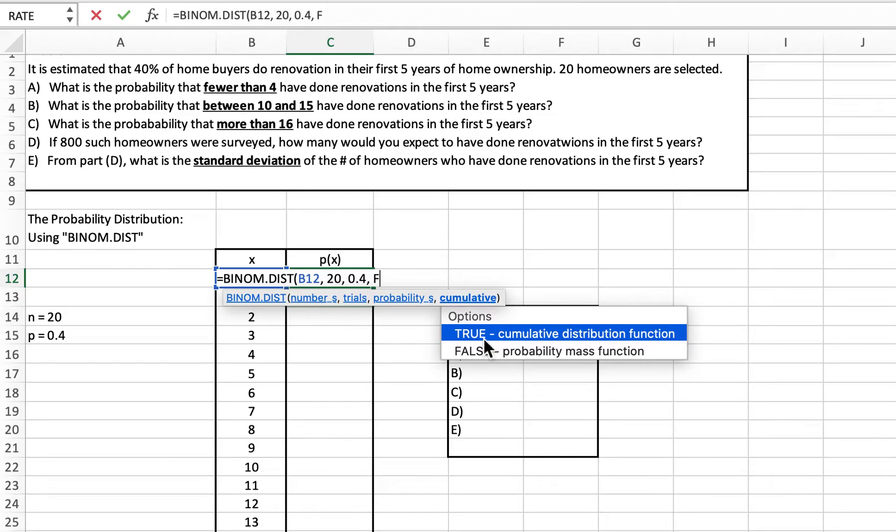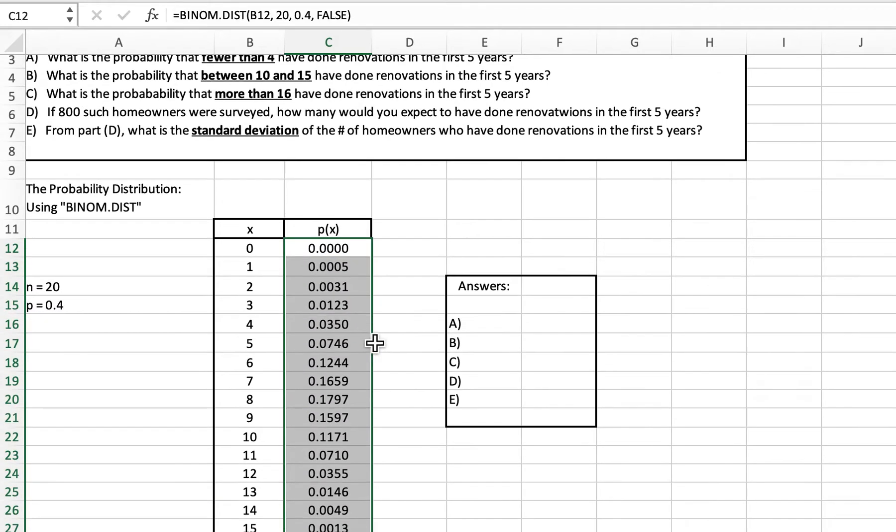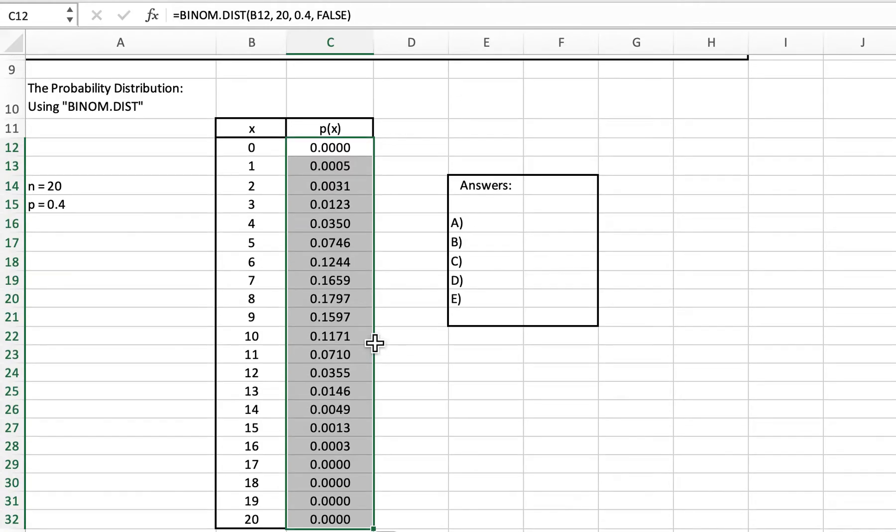Notice as soon as I type in the F, it comes up as an option to do false, and there is the probability. We basically have a 0% chance of there being zero successes here. If you notice this little box in the lower right-hand corner, if I double-click that, it automatically fills it down to the rest of the values. We have all of those probabilities there for us.